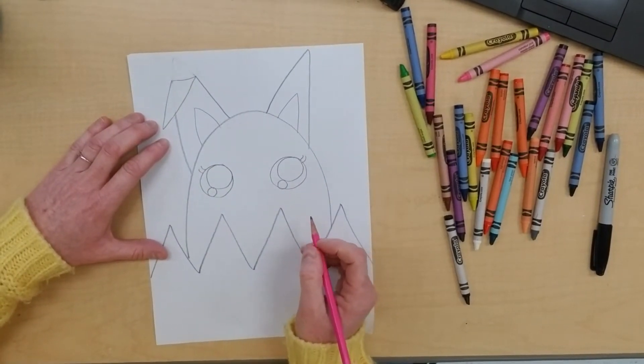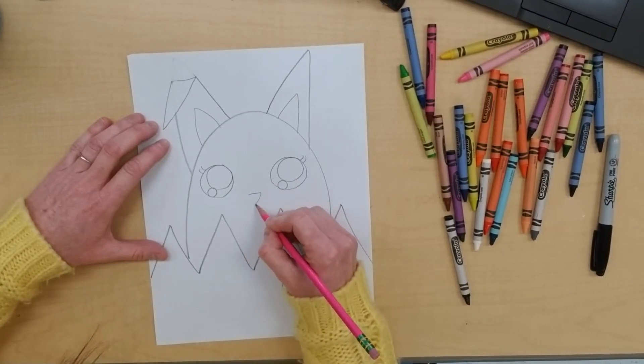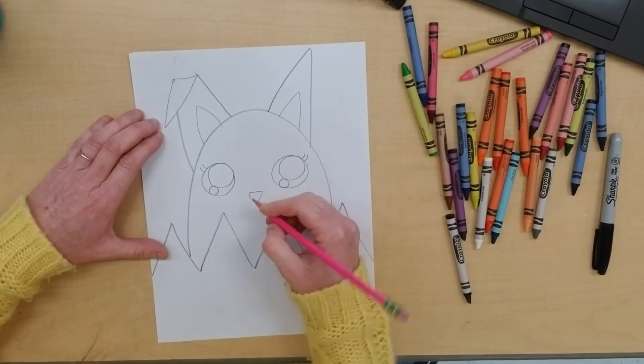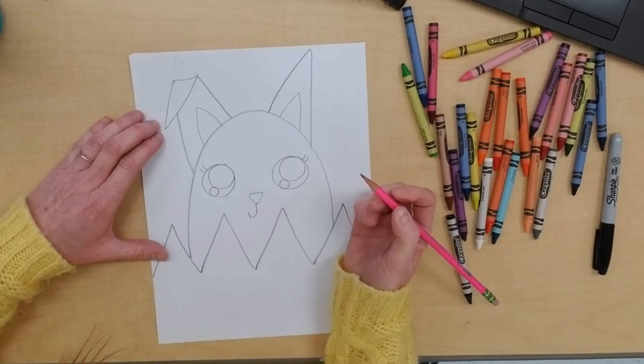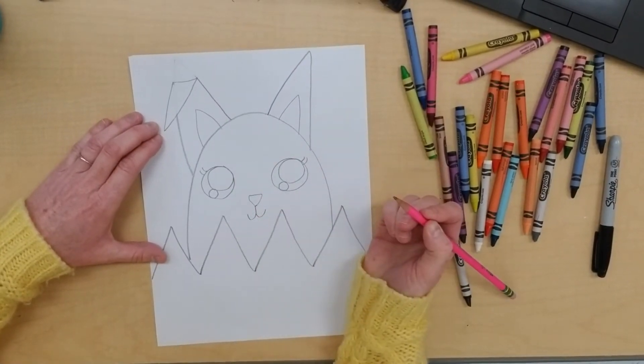Now a bunny has a little triangle nose, so I'm going to do a straight line and then a triangle facing down. And then let's make the letter J for the mouth, so a J and a backwards J. Tada!